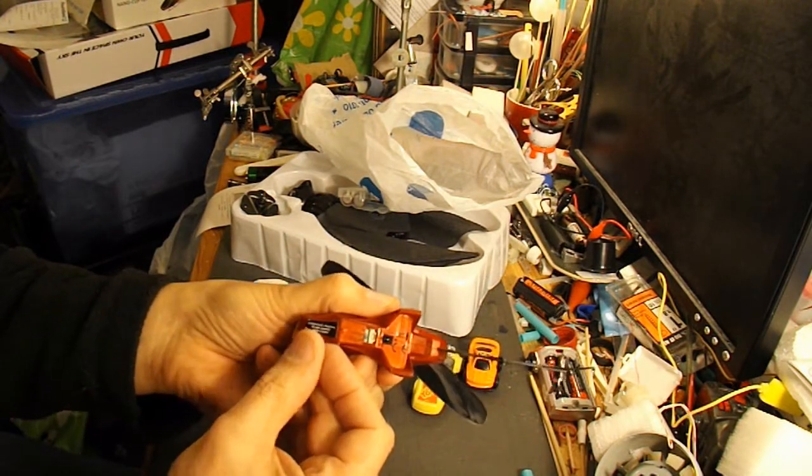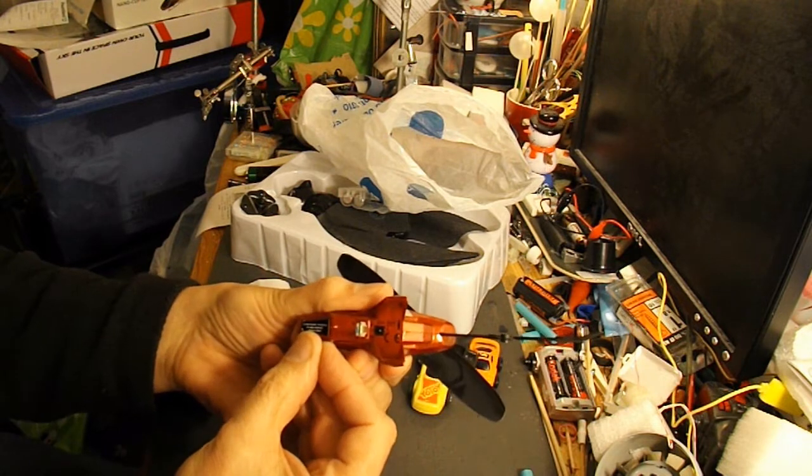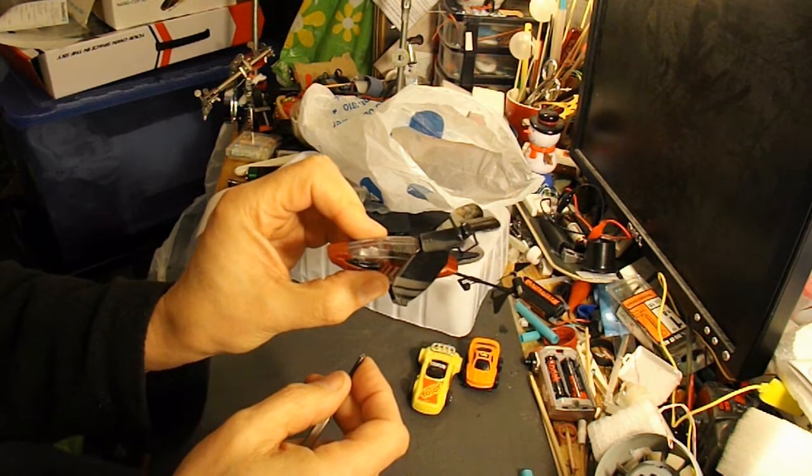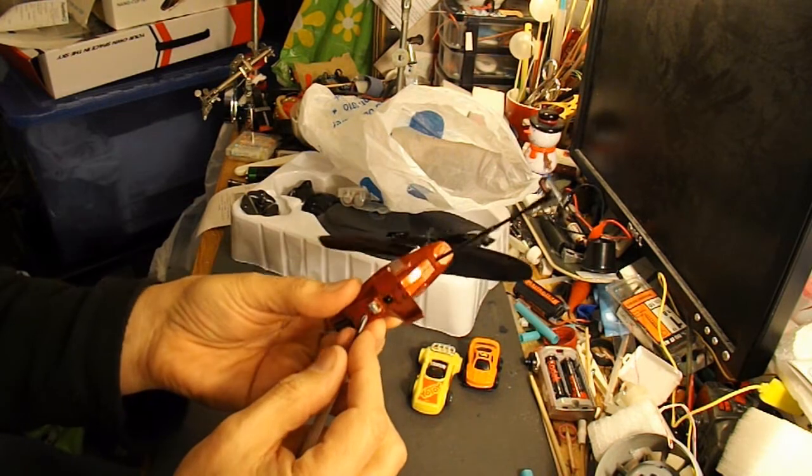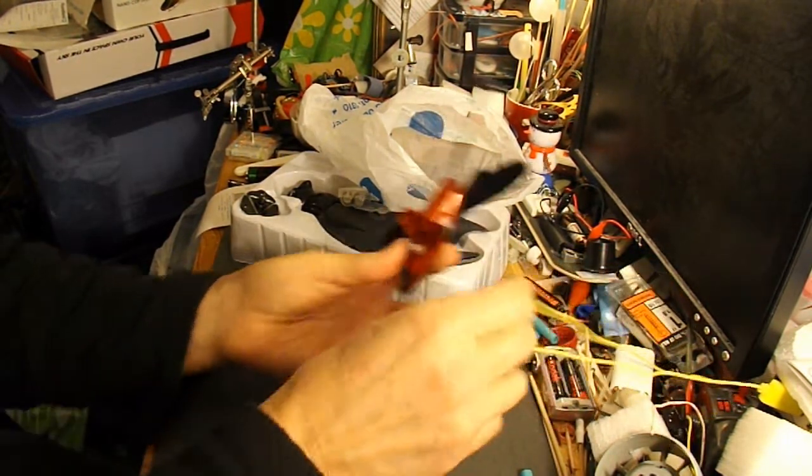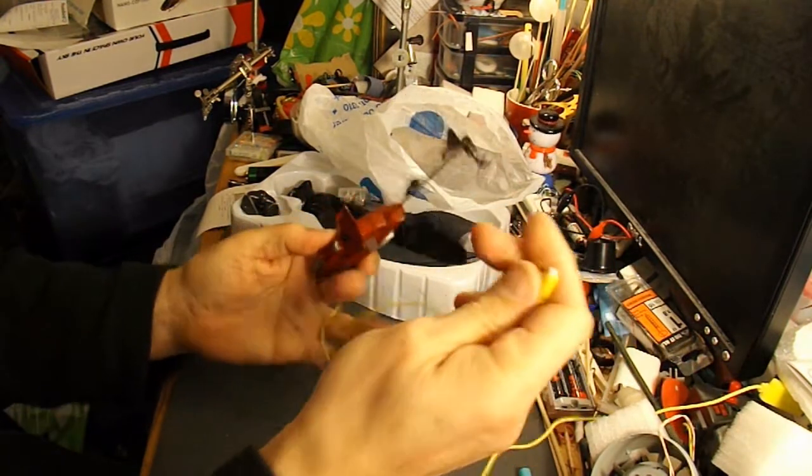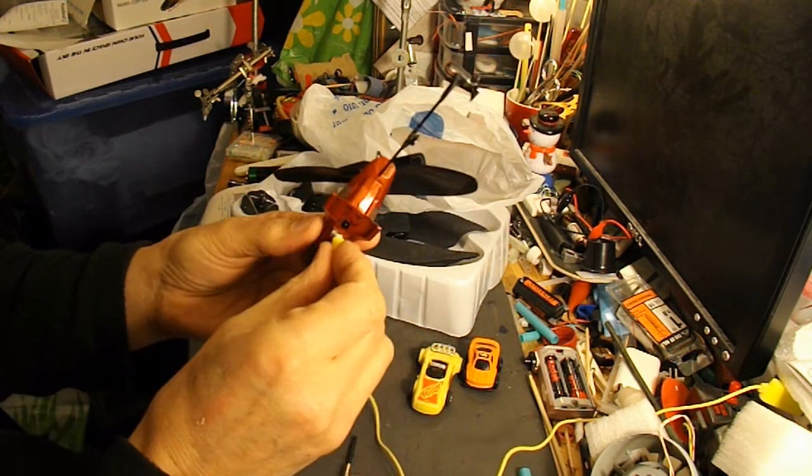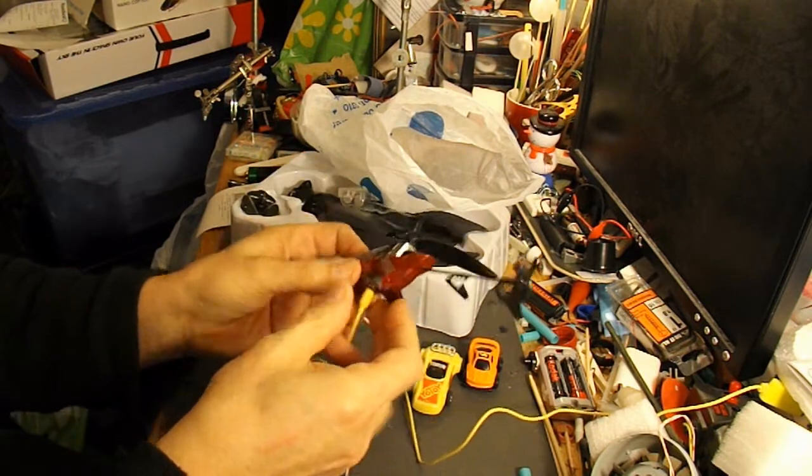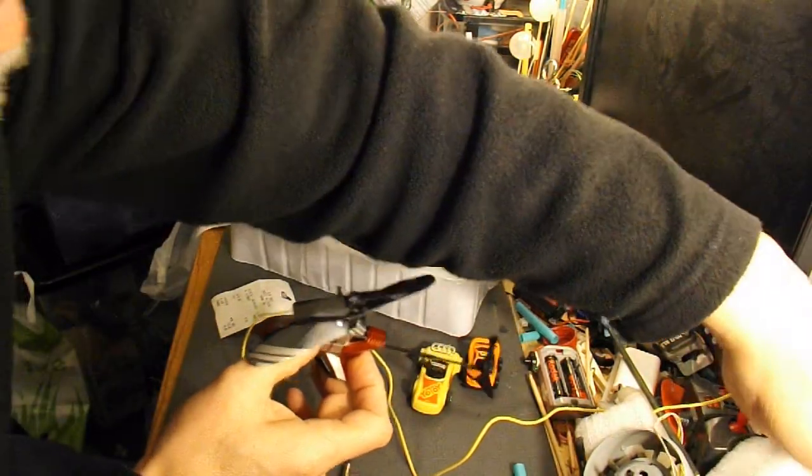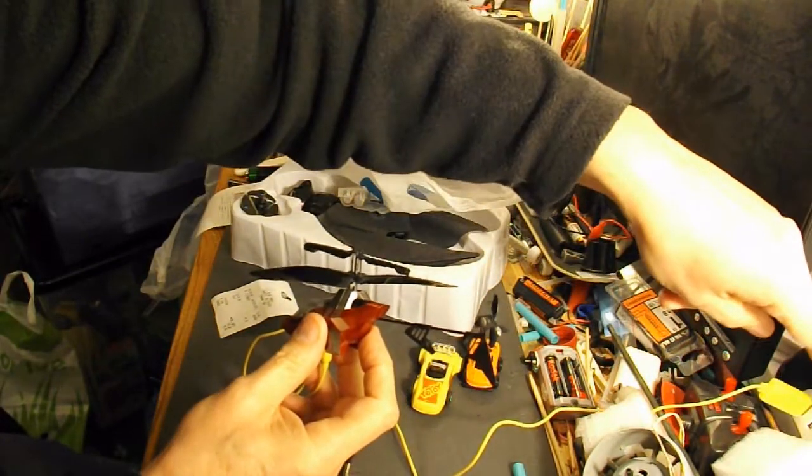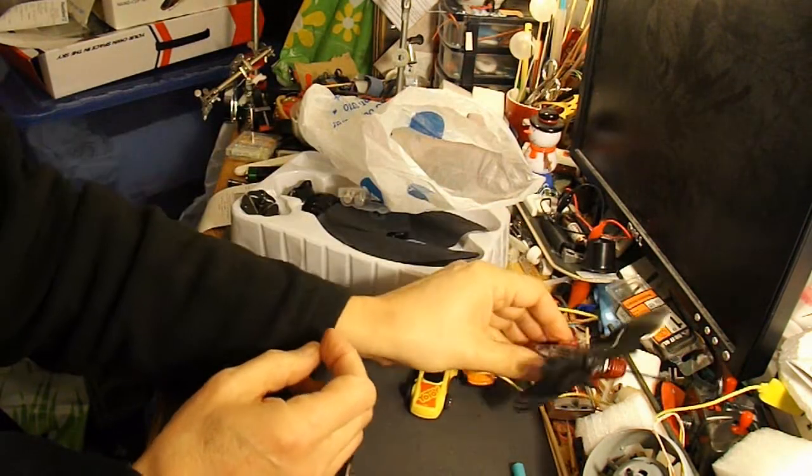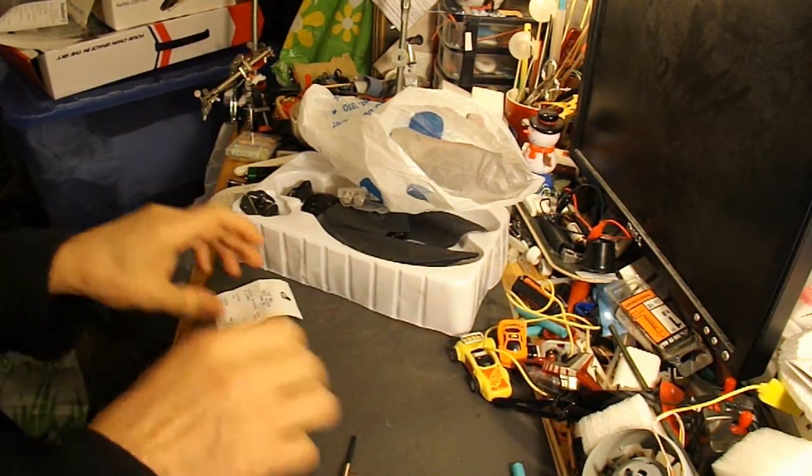It actually says Silver Lit on the bottom which is a fairly well-known model. It's got some charge in it as well. I'll put my charger into it. Switch it on. And we'll leave it charging for a while to see what happens. So we'll put that to one side and we'll go back to our bat.